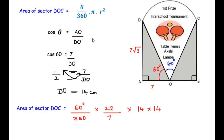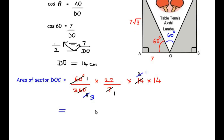Now substituting into the sector area formula: area = (60/360) × (22/7) × 14². Simplifying: 60/360 = 1/6, and 14/7 = 2, then 2/6 = 1/3. Numerator becomes 22 × 14 = 308, divided by 3, giving approximately 102.67 cm². This is the area of the glass sector.